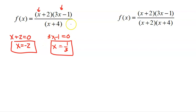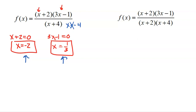Now wait — what about negative four? Negative four makes the denominator zero, so it's not in the domain and won't be a solution. You're not allowed to divide by zero. The reason I check this is I need to make sure that my two values — negative two and one third — don't also make the denominator zero. Since they don't, those are my official solutions.